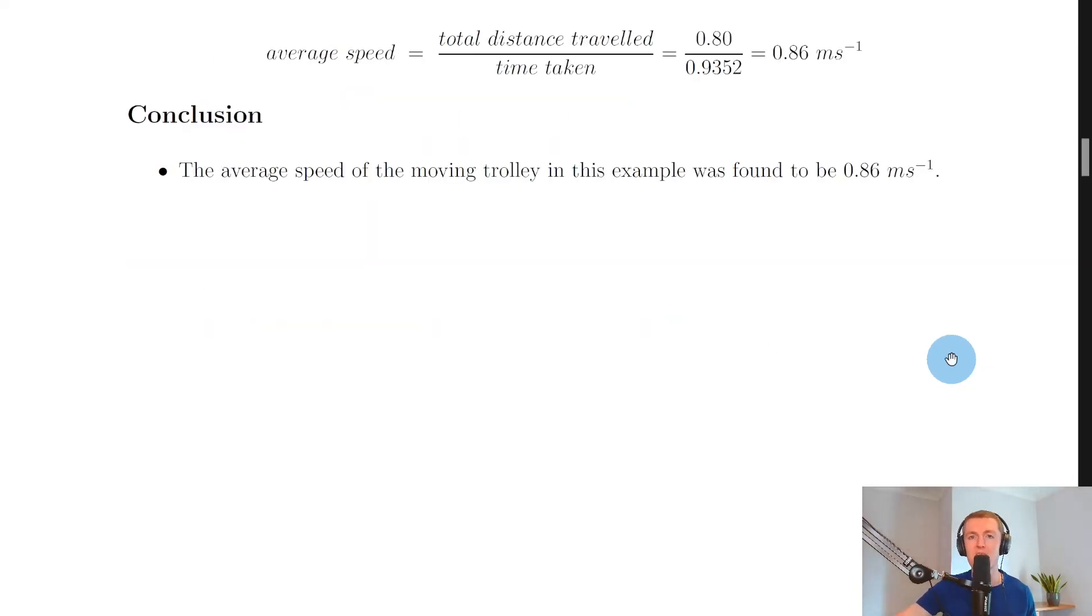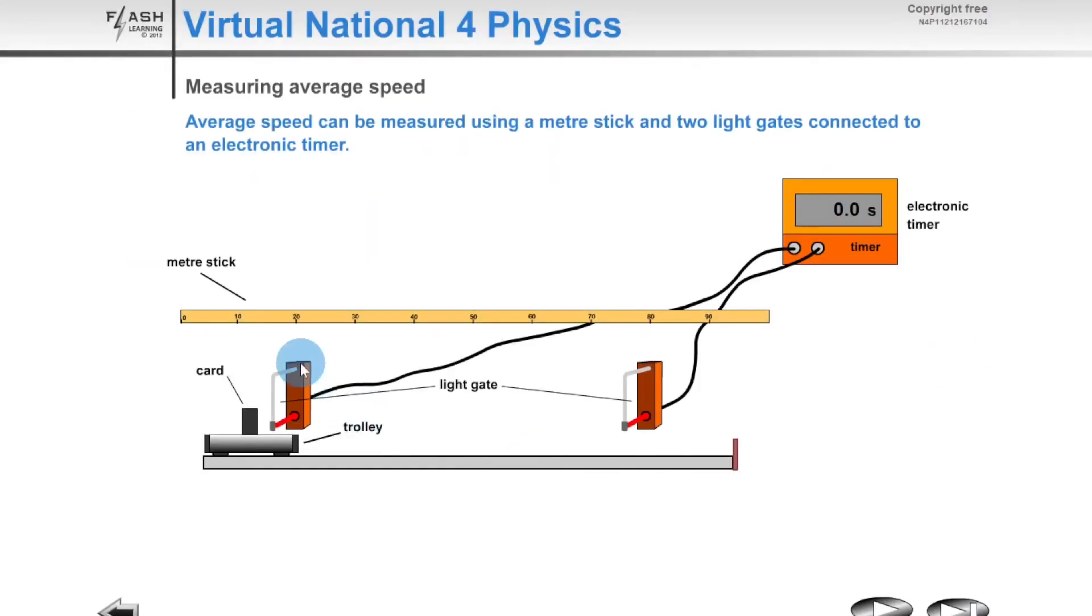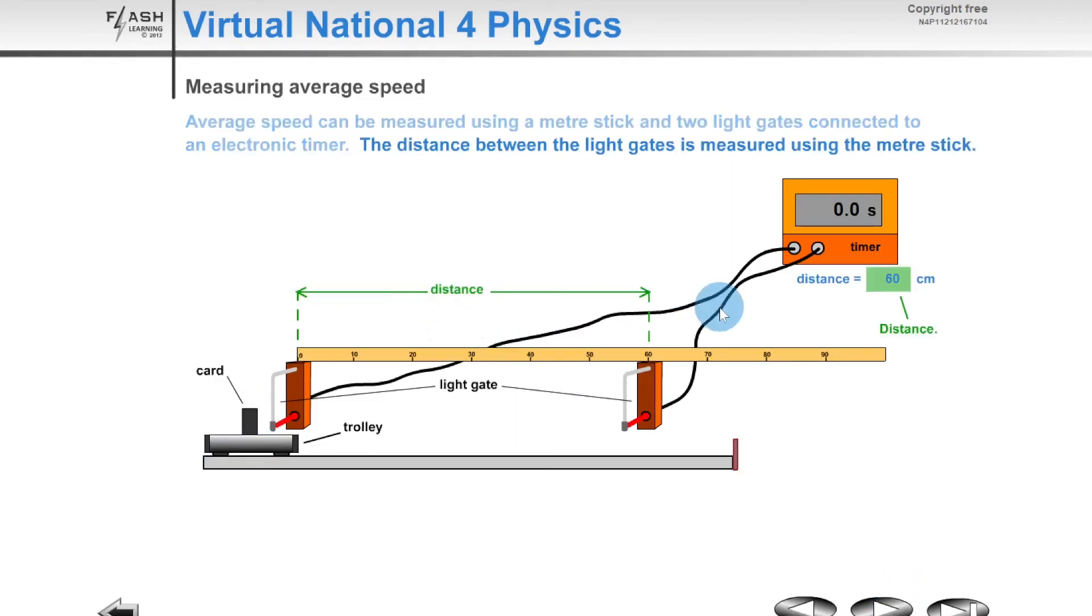Now I'll show you a quick simulation to help you better understand the procedure. Here we have two light gates connected to an electronic timer and a meter stick to measure the distance between them, and our trolley with the card or mask on it. You need to measure the distance between the two. Using the meter stick here, you can see it goes from zero to 60 centimeters.